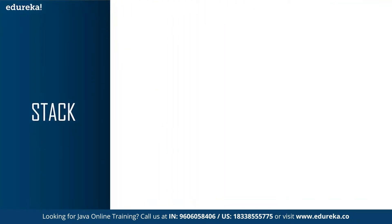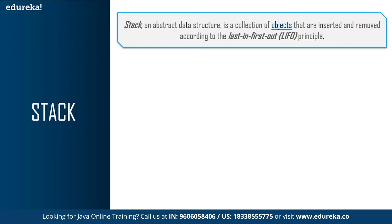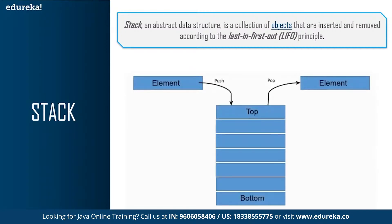Based on these categories, linear data structures are divided into stack, queue, and linked list. A stack is an abstract data structure. It is a collection of objects that are inserted and removed according to the last-in-first-out principle, that is LIFO. Objects can be inserted into a stack at any point of time, but only the most recently inserted — that is the last object — can be removed at any time. It is an ordered list in which insertion and deletion can be performed at only one end, that is the top.